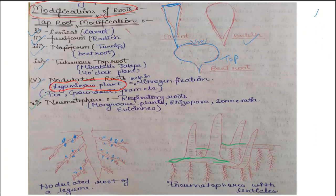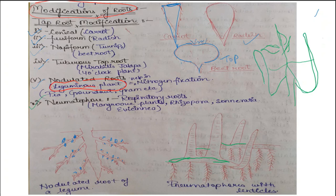Next type of root is the pneumatophore root — a special type found in aquatic plants. In aquatic conditions, the root bends itself into a U-shape and comes up above the water surface to carry out respiration. These roots are called pneumatophore roots, as you can see in the diagram with the water surface shown. Pneumatophore roots are characteristic of mangrove plants.